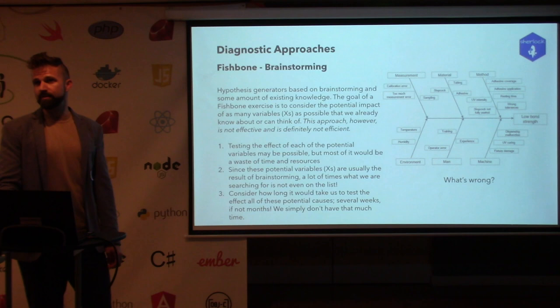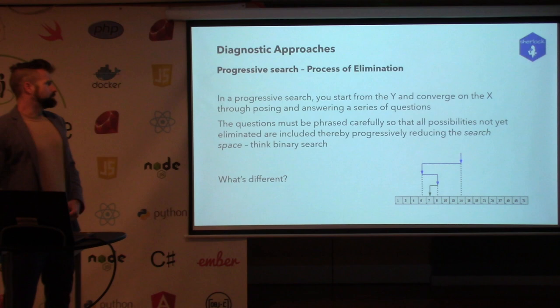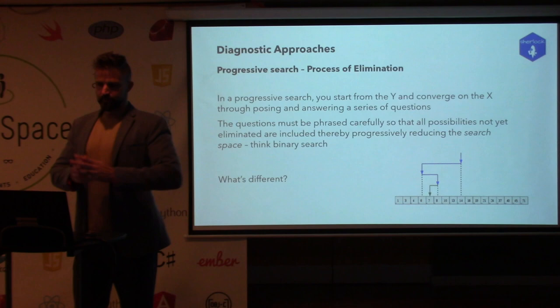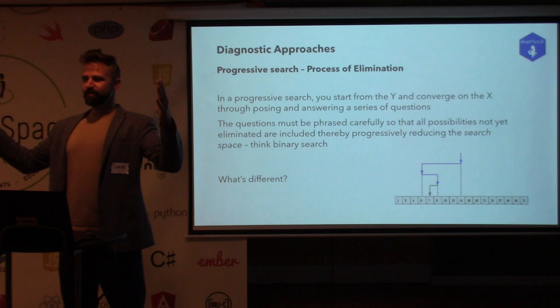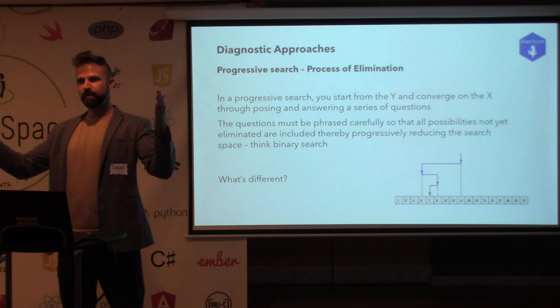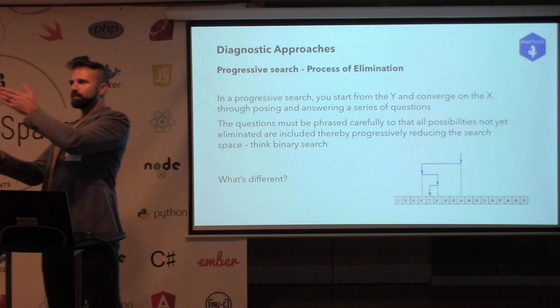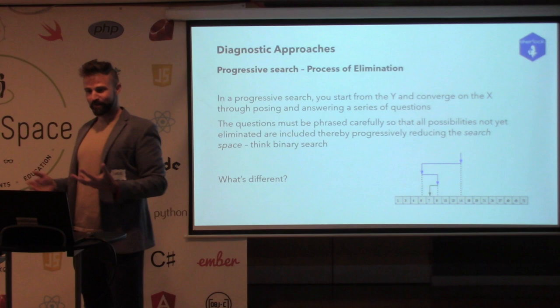If the problem is something you already know the answer to, just go fix it — Nike, just do it. Instead, what the package centers around is what the speaker calls a progressive search or process of elimination. Think of it as binary search: you have a list of numbers, the algorithm cuts it in half — is the answer in this half or that half? You've just eliminated the other half. You keep cutting things in half until what remains must be the answer.